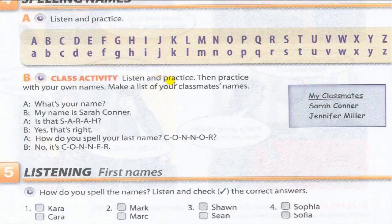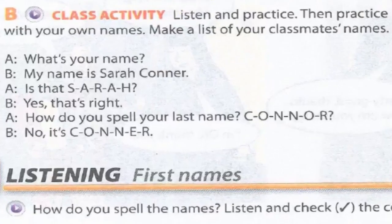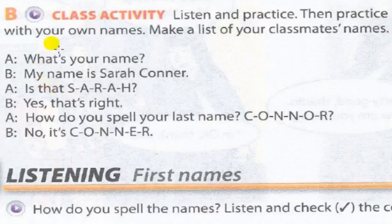Part B — Class Activity: listen and practice, then practice with your own names. Make a list of your classmates' names. What's your name? My name is Sarah Connor. Is that S-A-R-A-H? Yes, that's right. How do you spell your last name? C-O-N-N-O-R. No, it's C-O-N-N-E-R.